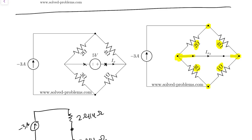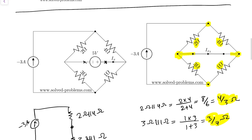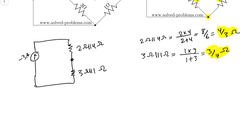We can find those equivalent values: 2Ω in parallel with 4Ω equals 2×4 divided by 2+4, which is 8/6 or 4/3 Ω. And 3Ω in parallel with 1Ω equals 1×3 divided by 1+3, which is 3/4 Ω. So the first equivalent is 4/3 Ω and the second is 3/4 Ω, giving us our simplified circuit.